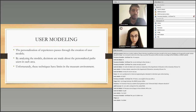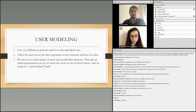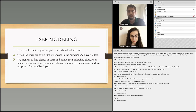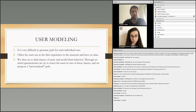Why? Because it is very difficult to generate a path for each individual user. The biggest problem is that often users are having their first experience in the museum and we have no data about them. So we try to infer this data with questionnaires, and then we try to find classes of users and model their behavior.